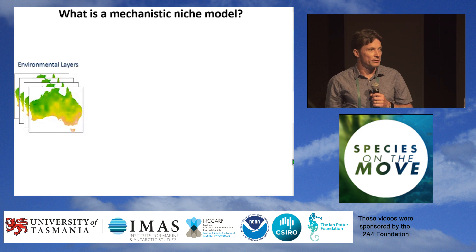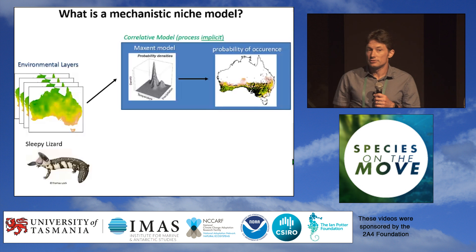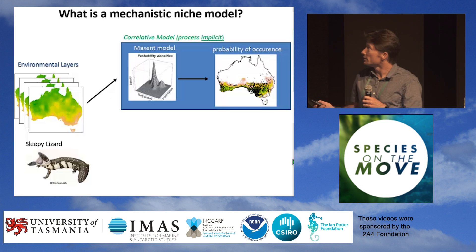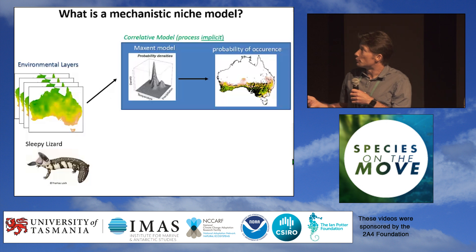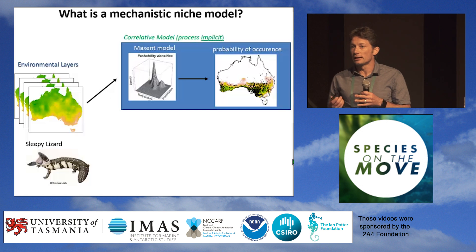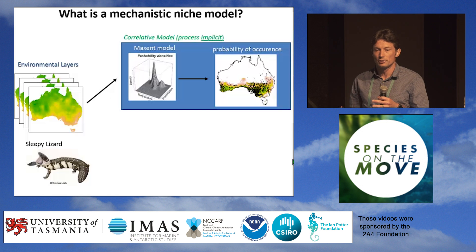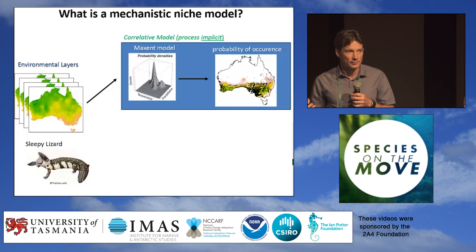We have an increasingly rich array of environmental layers with which to tackle this problem. The most typical way of using them is the correlative Species Distribution Modelling approach, where our starting point is the known distribution of the species. Here's an example: the distribution of the Australian sleepy lizard. We choose predictive variables likely important in limiting the distribution, query those layers at known sites, describe statistically an environmental space, and map it onto the landscape. This is a very powerful, process-implicit approach — even without the right mechanisms, statistically related processes can still yield a good model.